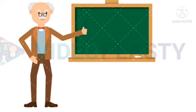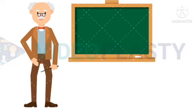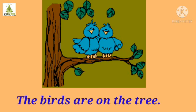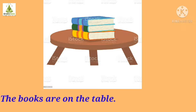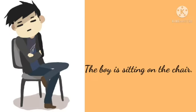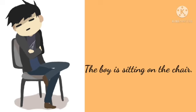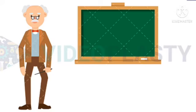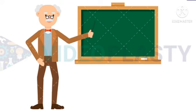Now, here we have the next preposition, and it is 'on'. Example: the birds are on the tree. Where can you see the birds? The birds are on the tree. The books are on the table. Kids, tell me where the books are kept. On the table. The boy is sitting on the chair. Where is the boy sitting? On the chair. Here we learned in which cases we use 'on'.